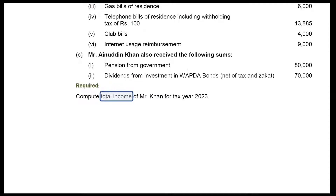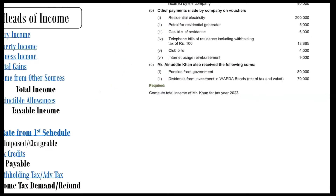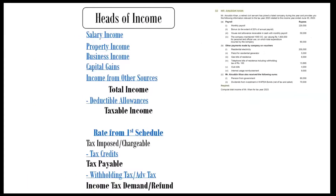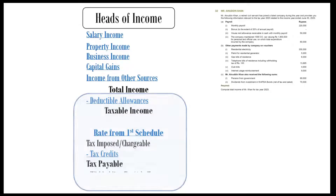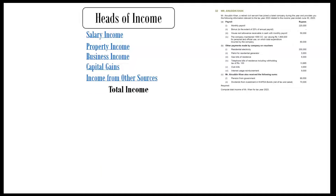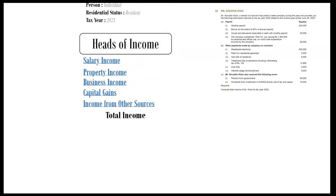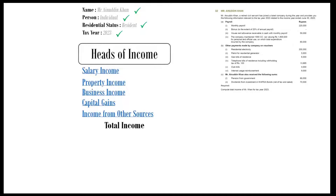Our answer format will look like this. Since we are required to compute total income, we are not required to compute this portion of the format — we can simply ignore the irrelevant portion. Let's fill in some basic information like name, type of person, residential status, and tax year.